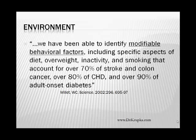How important is this? We've been able to identify modifiable behavioral factors — including specific aspects of diet, weight, inactivity, and smoking — that account for over 70% of stroke and colon cancer, over 80% of coronary heart disease, and over 90% of adult onset diabetes. That means that if we all changed our lifestyles collectively, we could get rid of 70%, 80%, and 90% respectively of these diseases. These are very important diseases in our society, affecting hundreds of thousands of people every year and costing billions of dollars to treat — all due to modifiable behavioral factors. Change your lifestyle, you change your life.